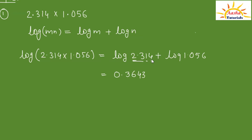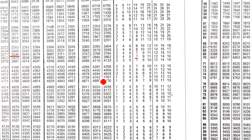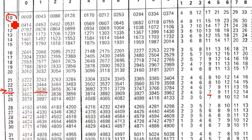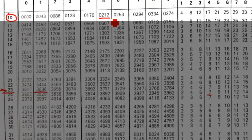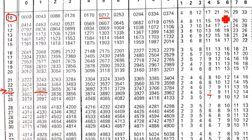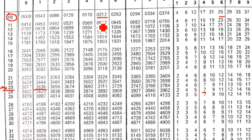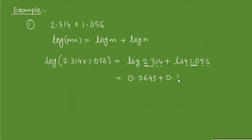Now let us add the log of 1.056. Again, this is a single digit number so its characteristic value is 0. We find the log of 10 in the 5th column, which is 0212, and the mean difference in the 6th column is 25. Adding 25 to 0212 gives us 0237. So the log of 1.056 is 0.0237.